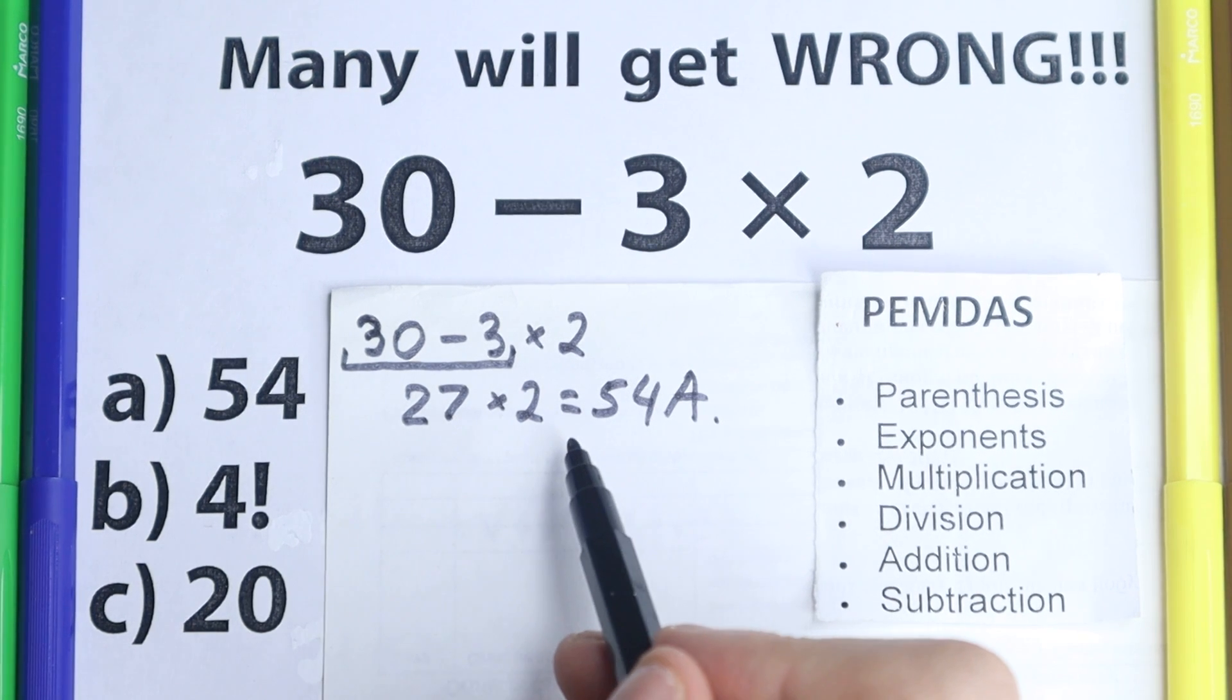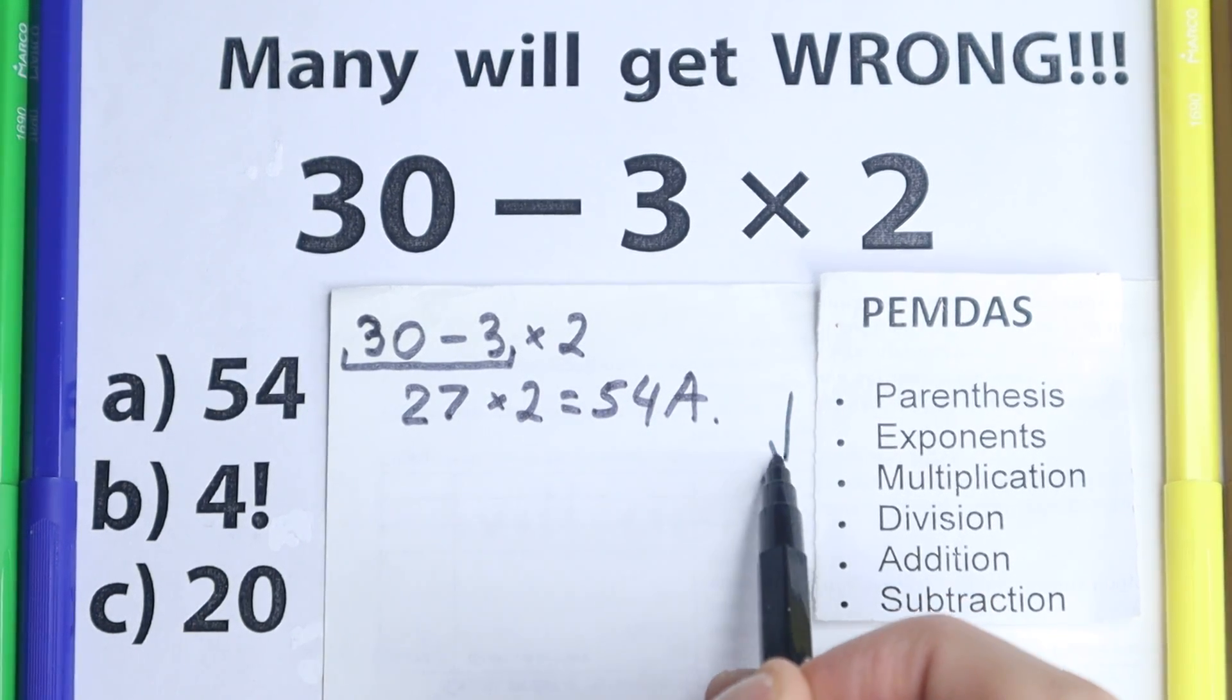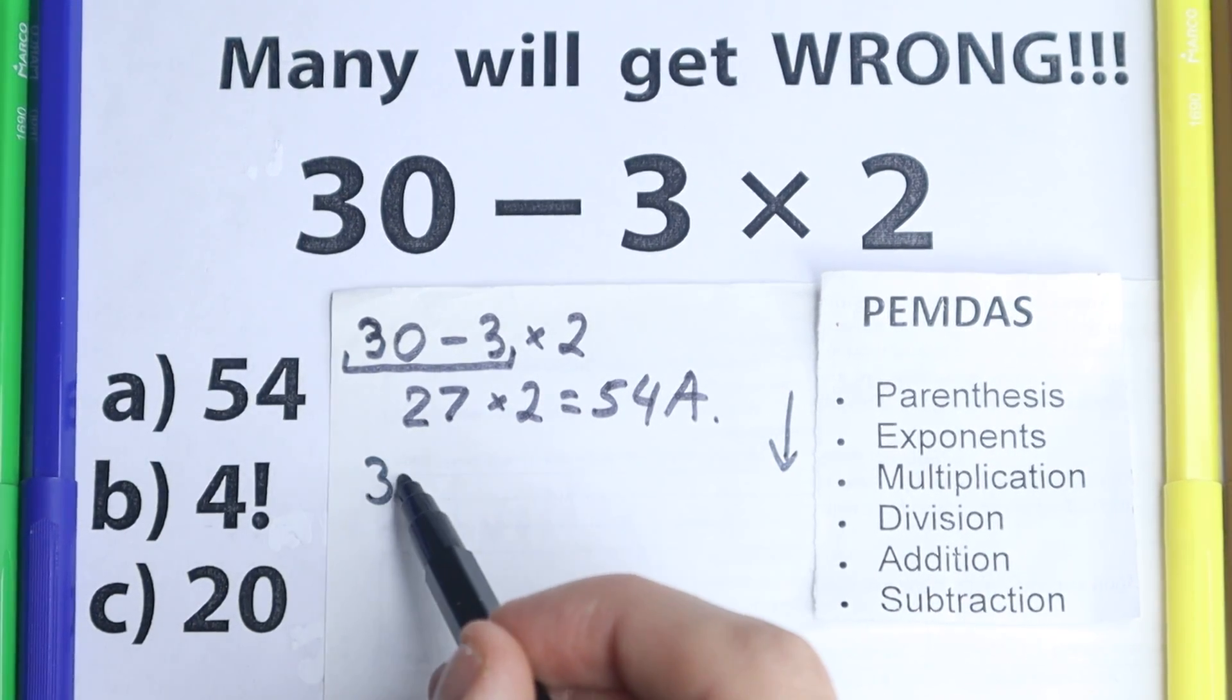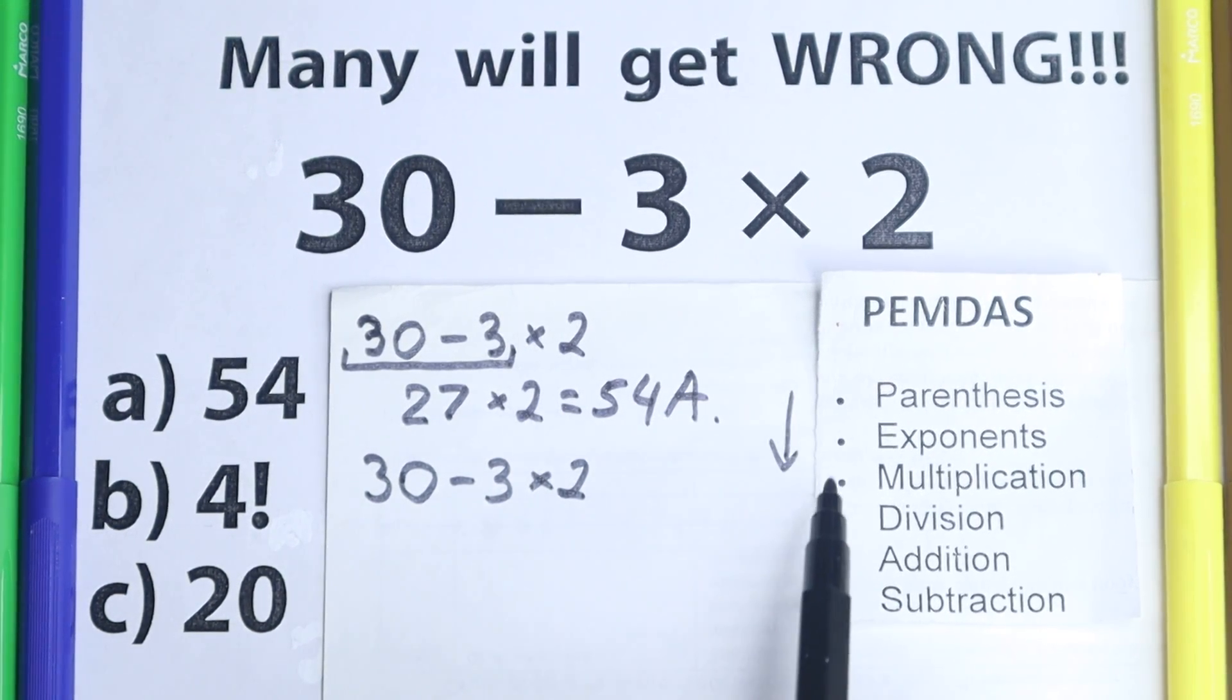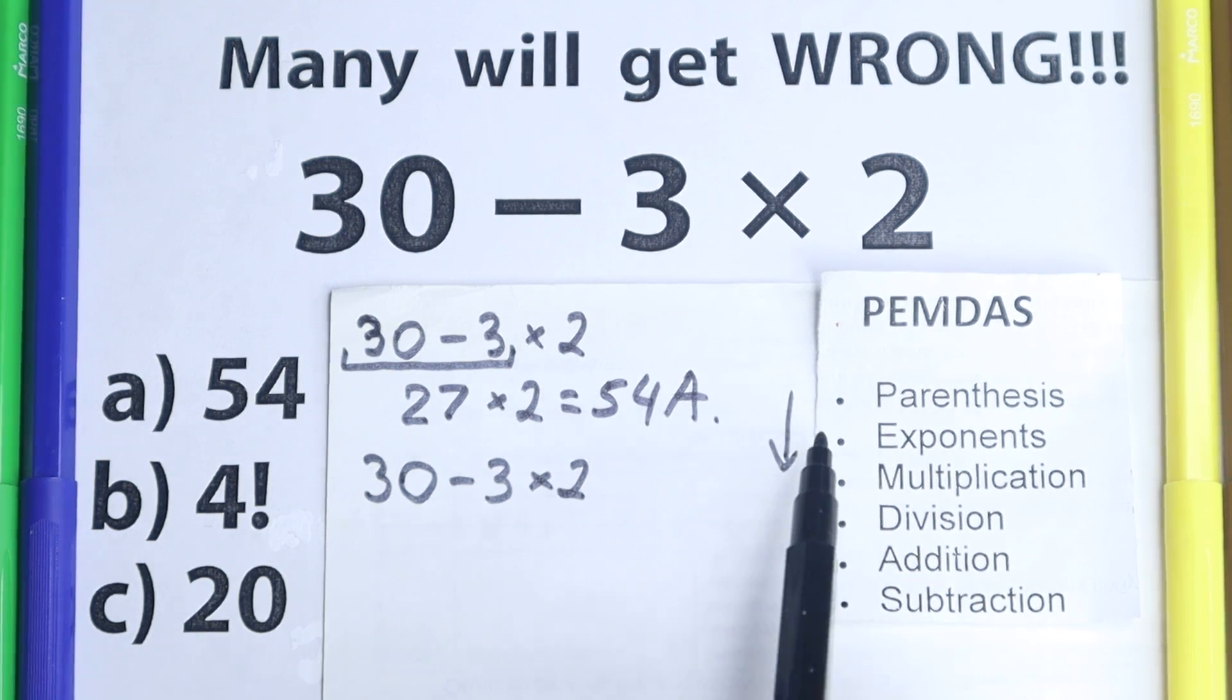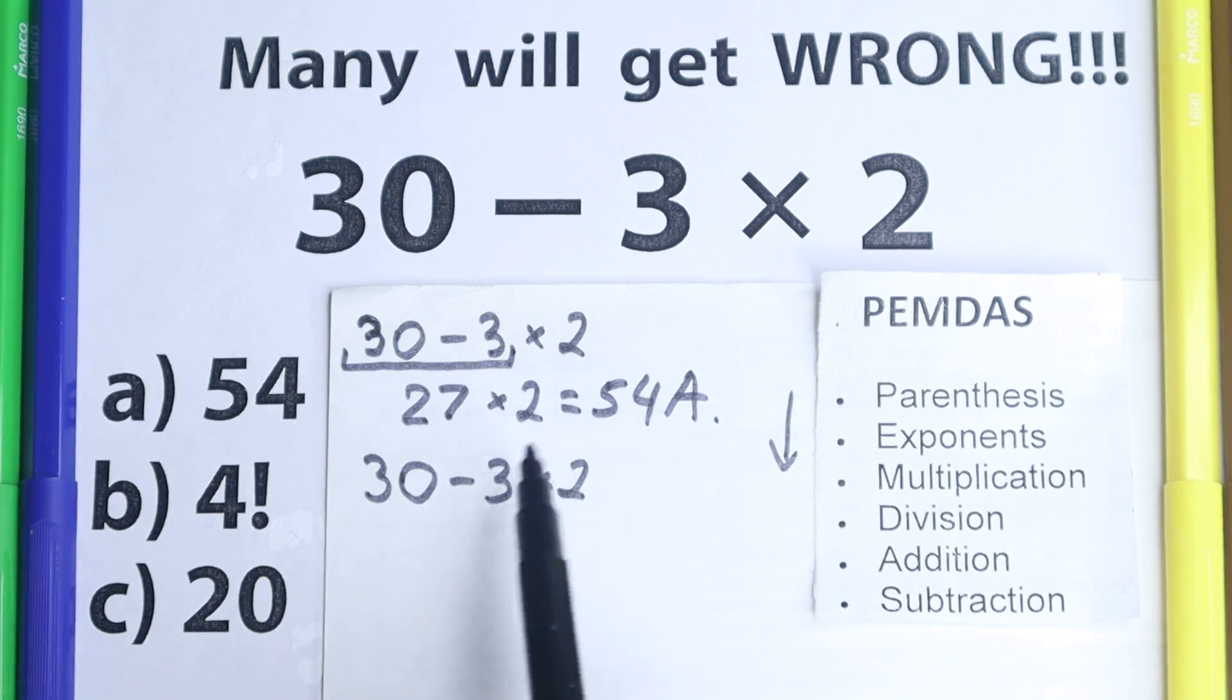Let's solve it according to PEMDAS. Because it looks like option A is correct, but if you look at order of operations, we have 30 minus 3 times 2. Let's look at this order of operations. We have a lot of steps right here and we will check this step real quick.